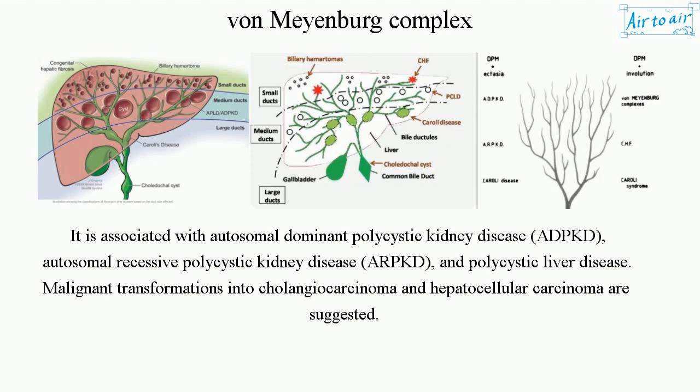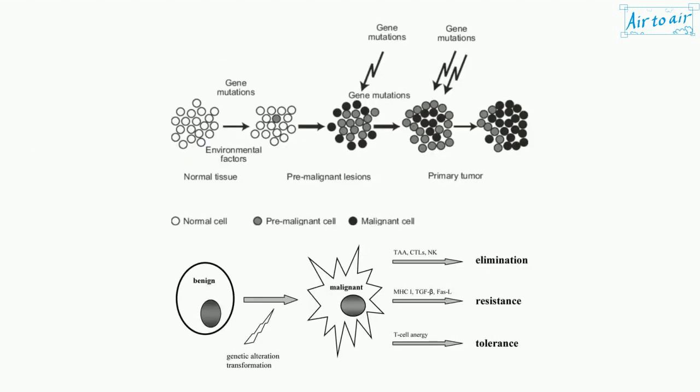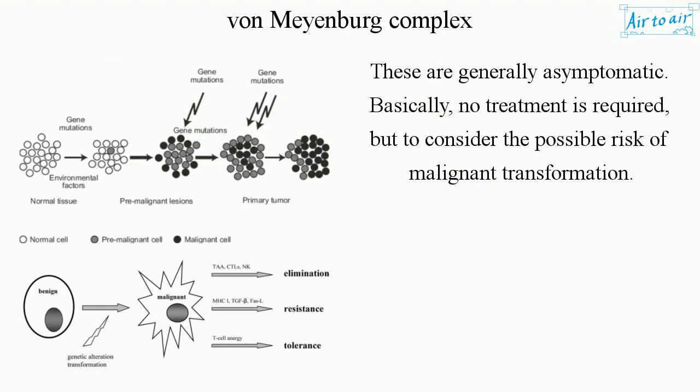Malignant transformations into cholangiocarcinoma and hepatocellular carcinoma are suggested. These are generally asymptomatic, and basically no treatment is required, but consideration of the possible risk of malignant transformation is warranted.